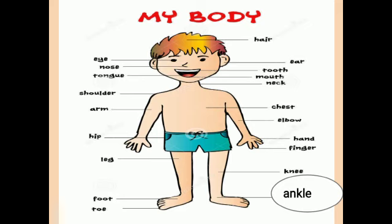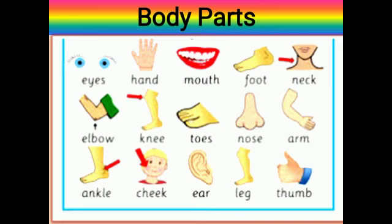This was all about my body. Now you know there are different body parts and their functions: eyes to see, hands to do the work, mouth to eat, foot to walk, neck to hold the head, elbow to bend the arms, knees to bend the leg, toes to balance the body, nose to smell, arm to hold the hand, ankle to balance the body, cheek, ears to hear the sound, legs to walk, and thumb to grip and do all the work.